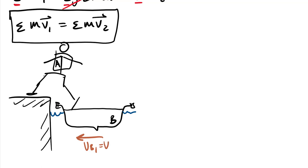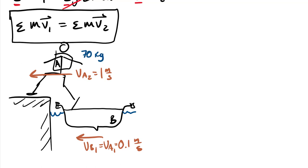The initial velocity vB₁ equals vA₁ equals 0.1 meters per second — you're floating toward the dock together. You step out at a final velocity vA₂ equal to 1 meter per second. Your mass is 70 kg and the boat's mass is 40 kg. The question is: what happens to the boat?